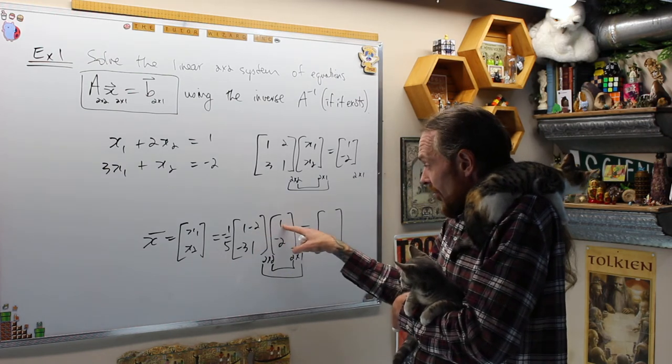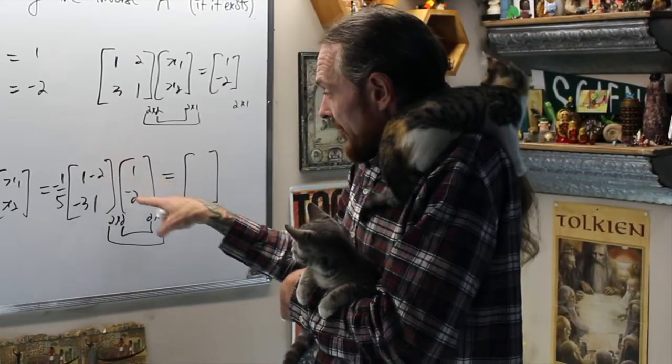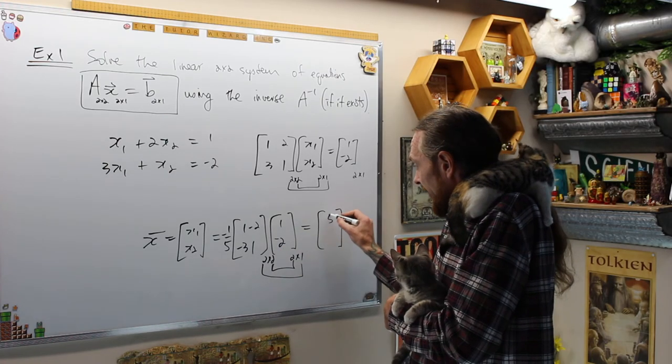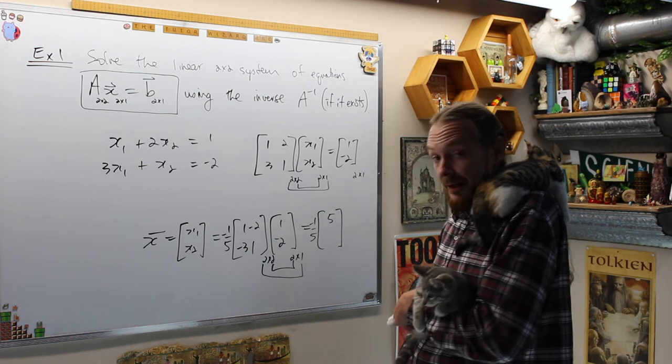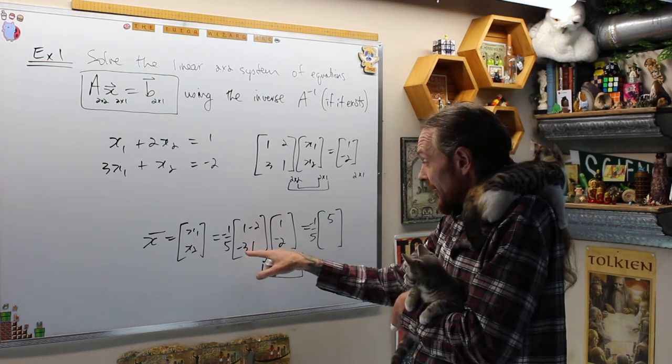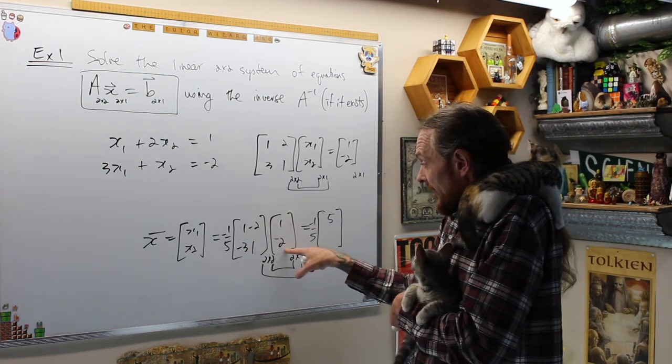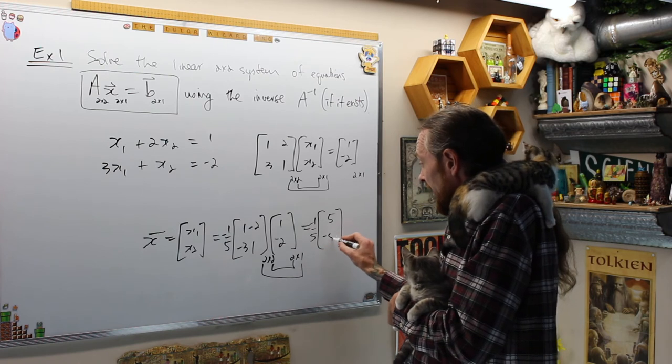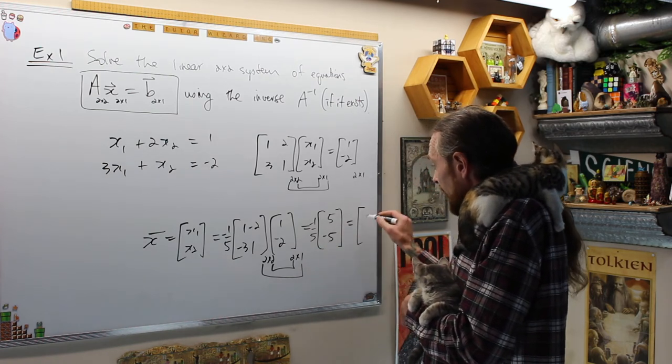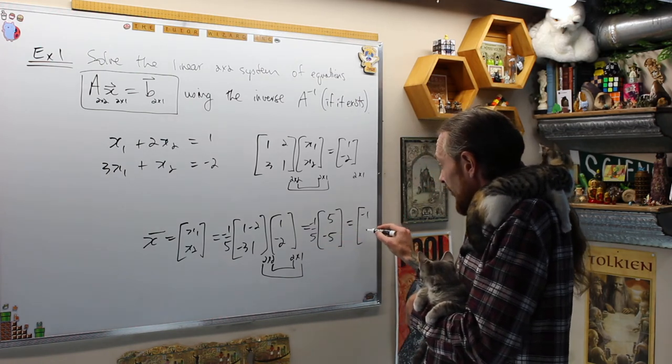What is it? It'll be 1 times 1, which is 1, plus negative 2 times negative 2, which is 5. Sorry, we have the negative 1 fifth on the outside still. And then this one is going to be negative 3 times 1 plus negative 1 times negative 2, which gives me negative 5. Distribute that in. I'm gonna get negative 1 and 1. This is the unique solution.